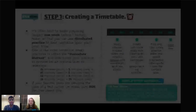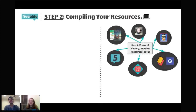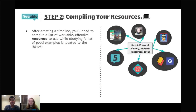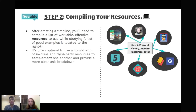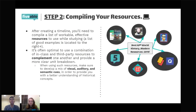The next step is compiling your resources. After creating a timetable, you'll need workable and effective resources — you want a good mix of different third-party resources and in-class materials. It's optimal to use third-party resources to complement one another and provide a clear unit breakdown. It's also very beneficial to use a mix of visual, auditory, and semantic cues. Visual sources include animations and pictures; auditory sources include videos where people talk about different concepts; and semantic cues give you the meaning of different terms — like AP World History textbooks and text-based resources.